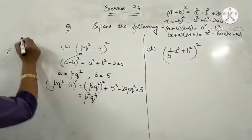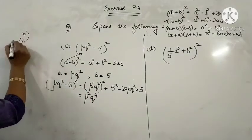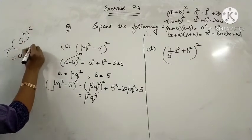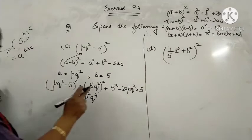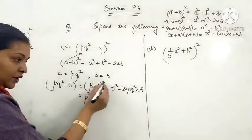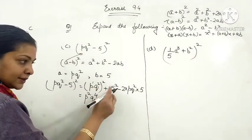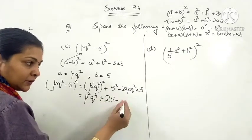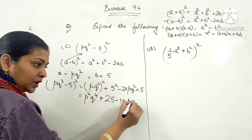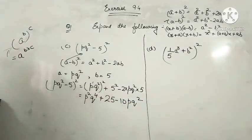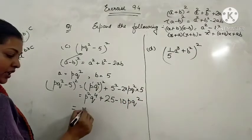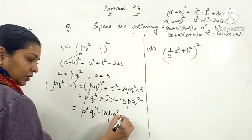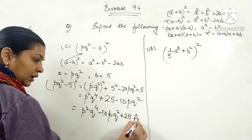When we have A raised to the power B raised to the power C, it equals A raised to the power B into C — so powers get multiplied. For 3 times 2, that is 6. Plus square of 5 is 25. Minus 10 P cubed squared. Rearranging the terms gives the final answer.